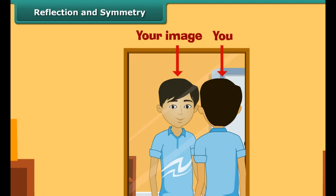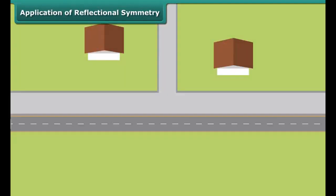Rectangles have two lines of symmetry, but a square has four. A circle has infinite lines of symmetry.